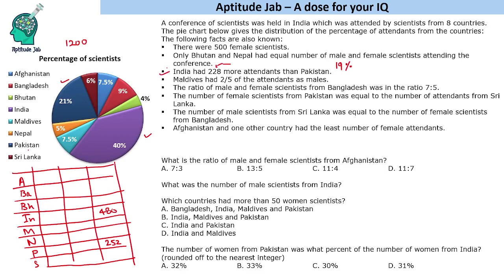We are also told there are 500 female scientists, so there will be 700 male scientists. Now we fill in total scientists for each country from the pie chart: Afghanistan is 7.5% which is 90, Bangladesh is 9% which is 108, Bhutan is 4% which is 48, Maldives is 7.5% which is 90, Nepal is 5% which is 60, and Sri Lanka is 6% which is 72.